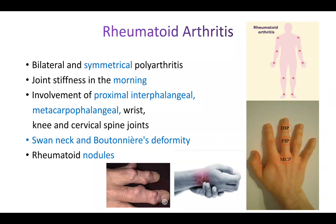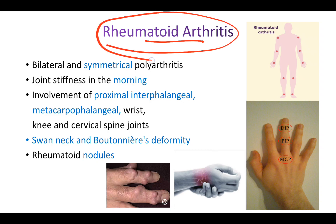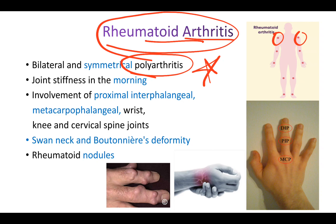In this video, let's talk about rheumatoid arthritis, one of the most commonly asked questions. The main complaint in this condition is polyarthritis — inflammation in multiple areas which leads to pain. This arthritis is symmetrical, as you can see in this image: both elbows, both shoulders, both feet, both hands. It's bilateral and symmetrical, not unilateral or one-sided.